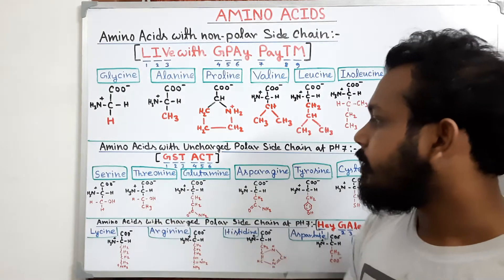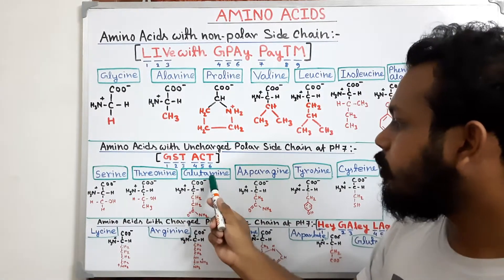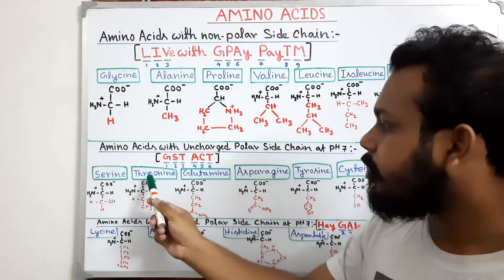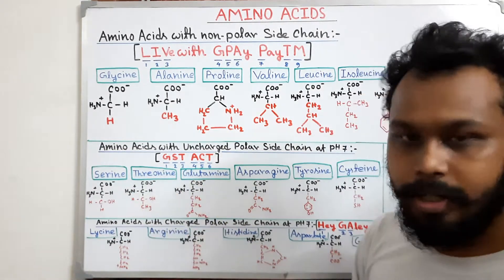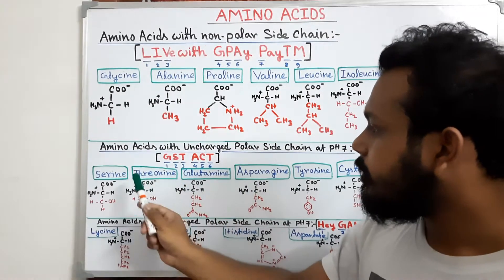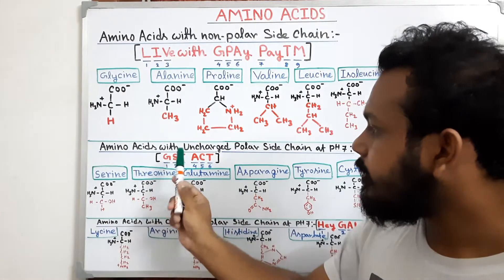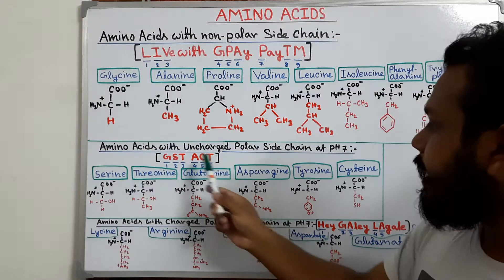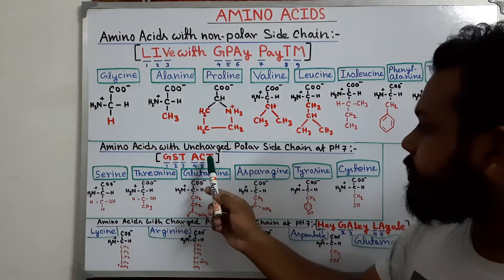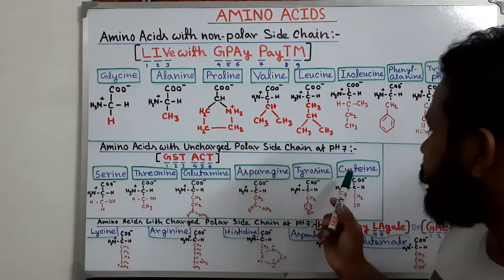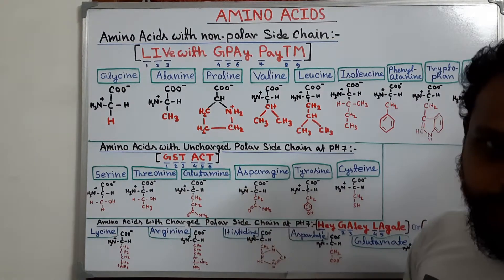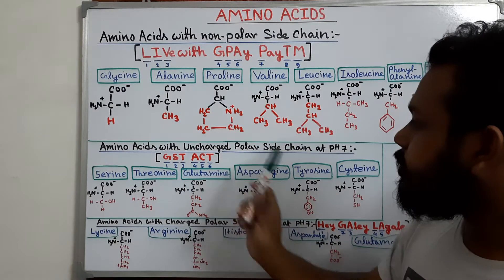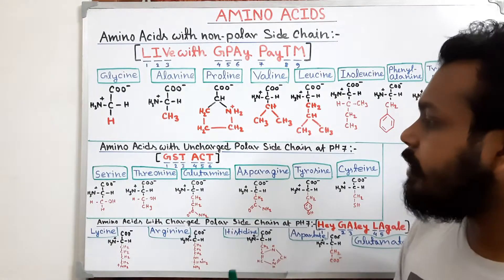'GST' represents: G for glutamine, S for serine, and T for threonine. 'ACT' represents: A for asparagine, C for cysteine, and T for tyrosine. So the uncharged polar side chain group is memorized by 'GST ACT.'